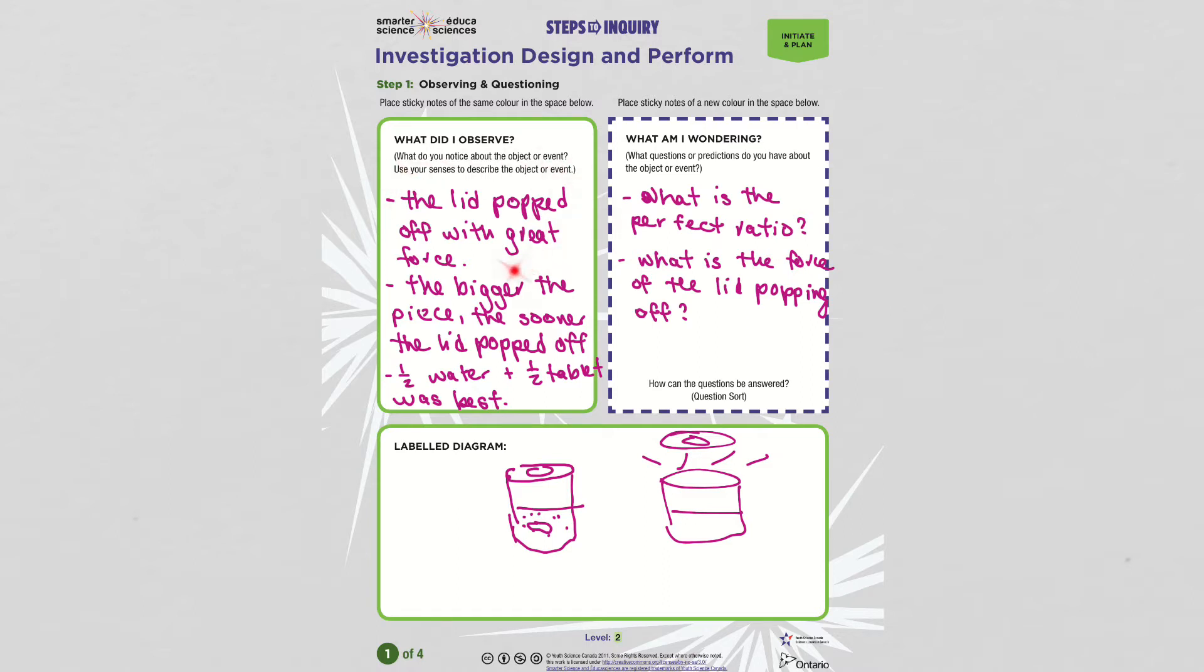A lot of people said that the lid popped off with a lot of force once they found a container that actually didn't leak and let the pressure build up in the container. Some people observed that the bigger the piece they used, the sooner the lid would pop off. That kind of makes sense because it would be making more gas.